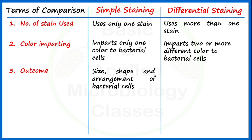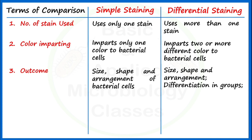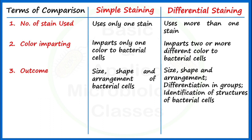The outcome of differential staining: just like simple staining, differential staining can also help us determine the size, shape, and arrangement of bacterial cells under examination. But beyond that, as the name indicates, it also helps us differentiate between different groups of bacteria, like gram positive and gram negative bacteria. It also helps identify the presence of different types of structures like capsule, flagella, and endospores present in bacterial cells.